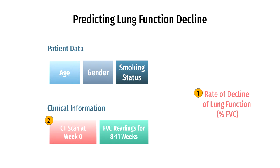As we can see from our training data, we have two problems. We do not have rate of decline percentage lung function for each patient, and CT scan images are not a feature that is friendly with our traditional machine learning methods. This means that we will need to do some pre-processing using computer vision.